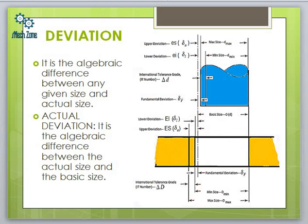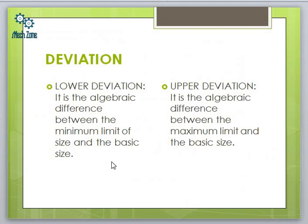Lower limit, upper limit, basic size, and tolerances are always positive and never zero. Deviation, however, can be positive, negative, or zero. Zero deviation means there is no variability in production. Lower deviation refers to the algebraic difference between the minimum limit of size and the basic size. Basic size minus the lower limit is called lower deviation; basic size minus the upper limit is called upper deviation.